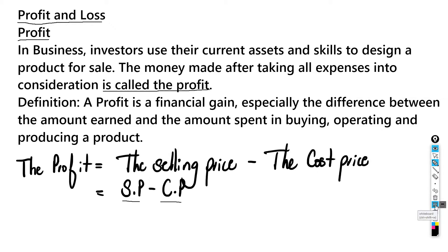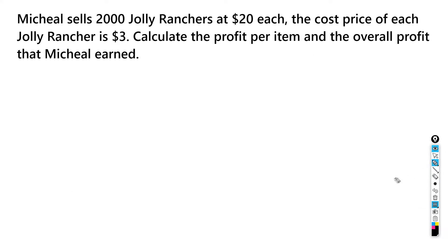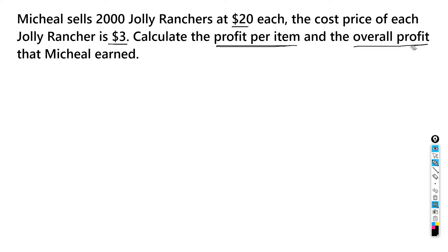Let's look at an example. Michael sells 2,000 Jolly Ranchers at $20 each. The cost price of each Jolly Rancher is $3. Calculate the profit per item and the overall profit that Michael earned. So he bought each Jolly Rancher for $3 and is selling them at $20 each.